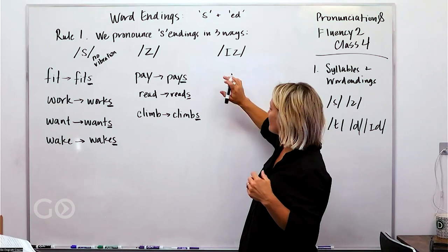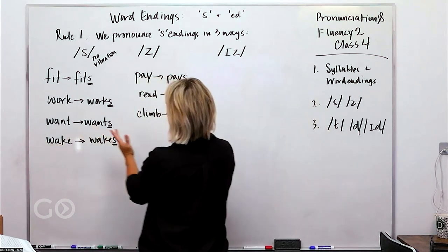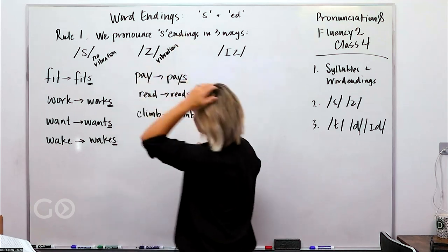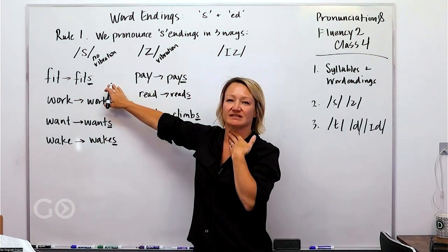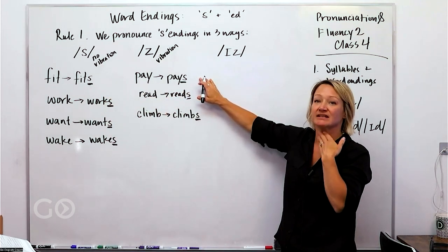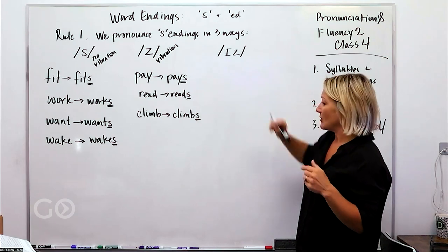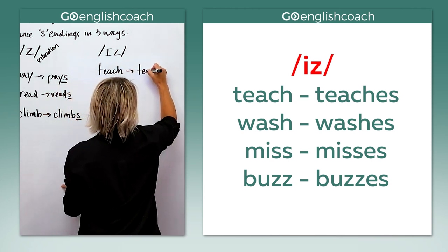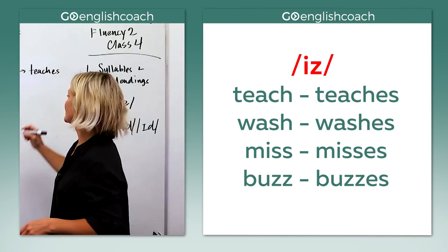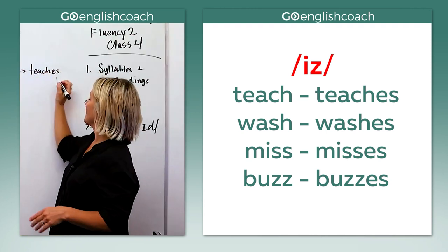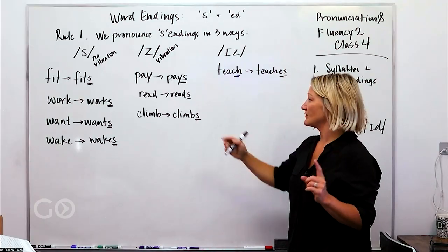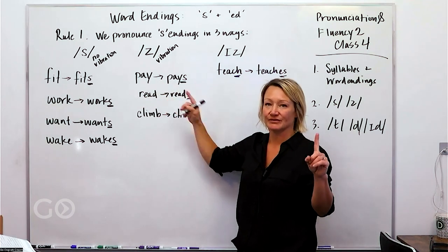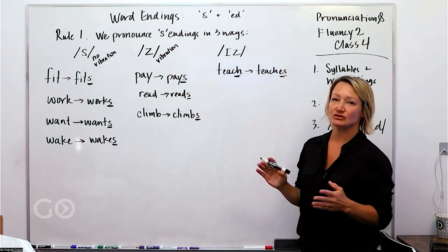Now we've got this third way of pronouncing something. If you notice in both of these cases with S, this does have vibration. No vibration fit fits, no vibration. Pay pays, it does vibrate here. Now with this I Z sound, we've got, let's see, teach. Here's an example. Teach goes to teaches. So you've got this is the final sound, and the final sound here is is. If you notice here, pay one syllable, pays one syllable. We are not adding a syllable. However, in this category we do add a syllable.